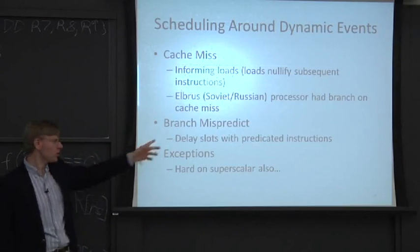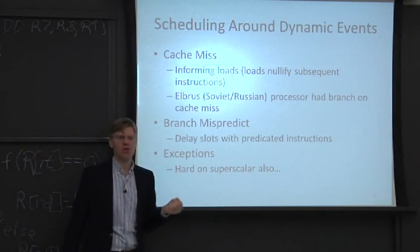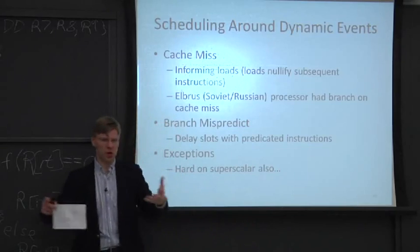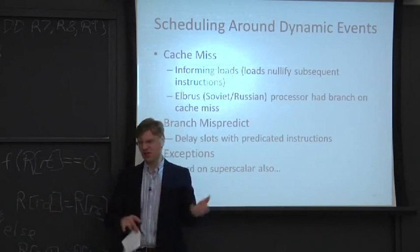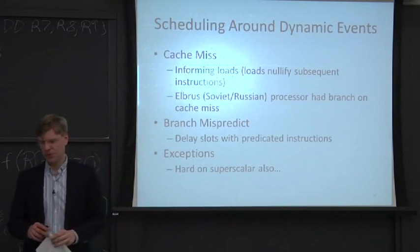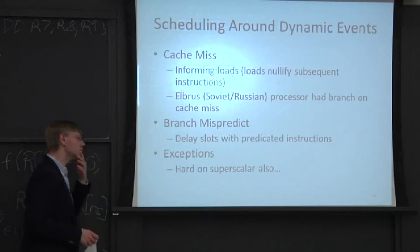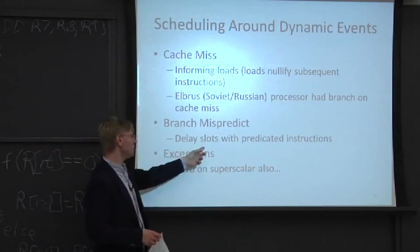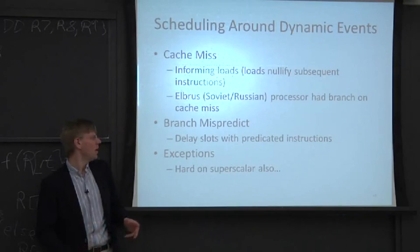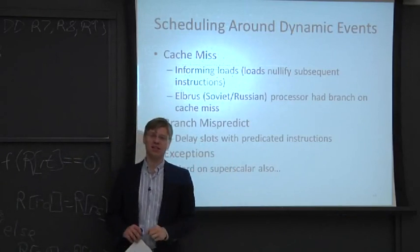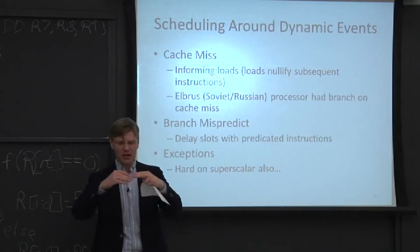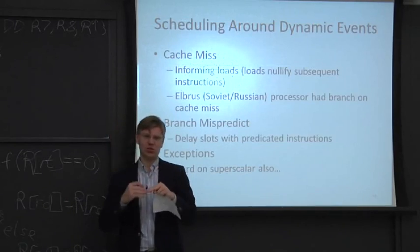Branch mispredicts are another limiter. We already talked about one technique — predication. But that doesn't help if you have big pieces of code, big code sequences and big code hammocks. You can't necessarily predicate your entire program. One solution people have come up with is adding branch delay slots. So you have a VLIW processor — let's say it's three wide — and you add branch delay slots in your instruction set.